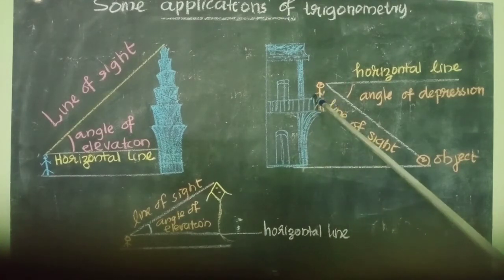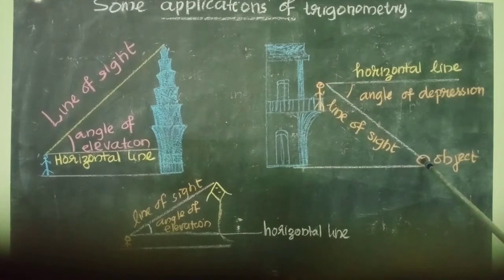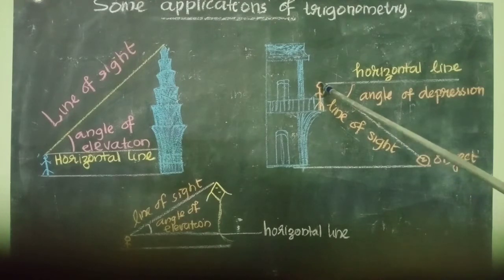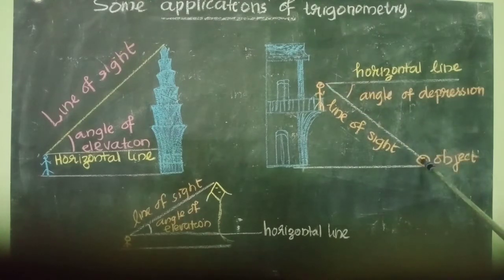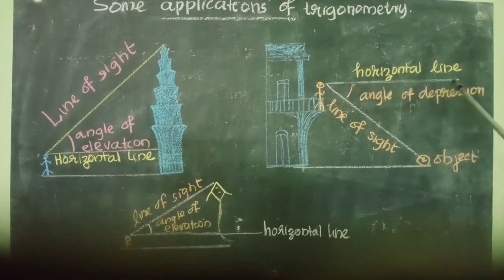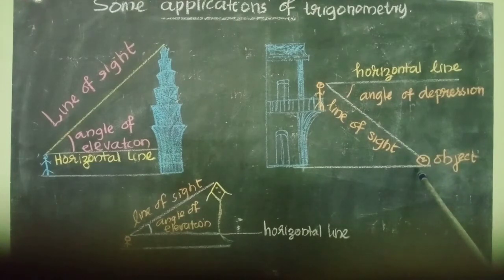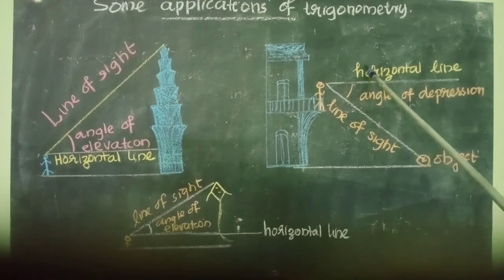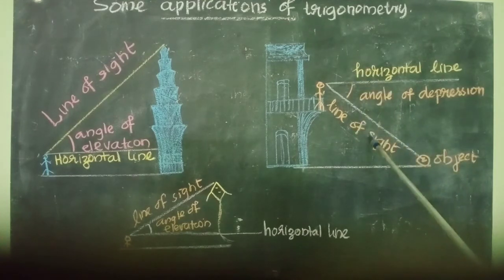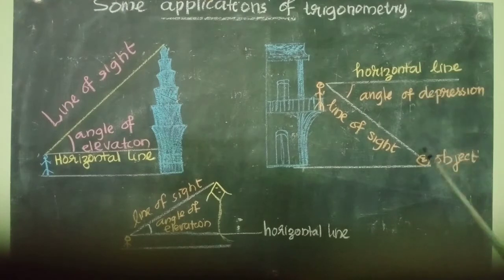Now you see the next figure. Here the observer is on the balcony and is looking at an object on the ground. This is the line segment joining the eye of the observer and the object — so this is the line of sight. This one is the horizontal line. You can see the object is below the horizontal line. The angle formed by the horizontal line and line of sight is the angle of depression when the object is below the horizontal line.